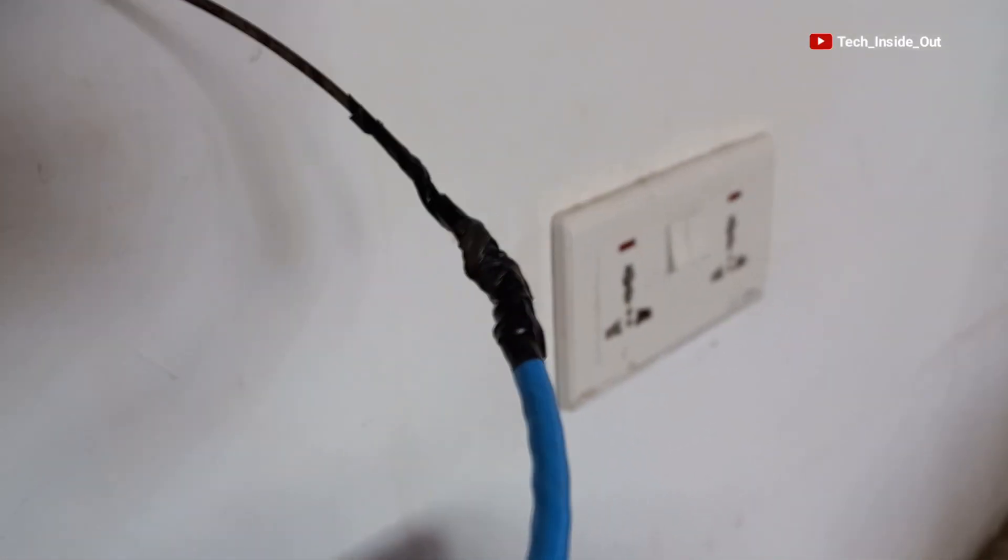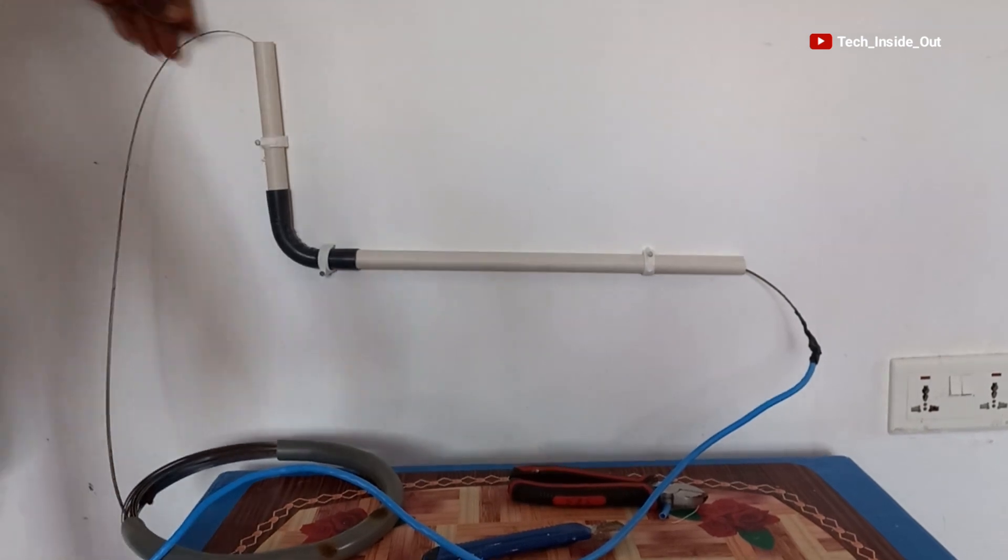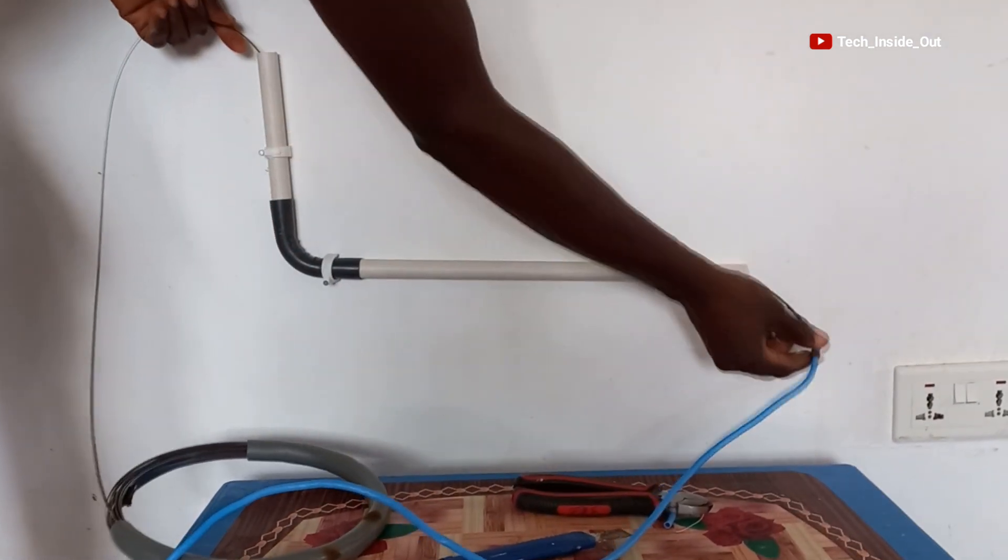So this is what we have. We will now withdraw the fishing tape, and that will let in the CAT6 cable.